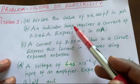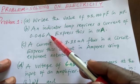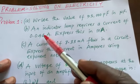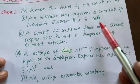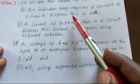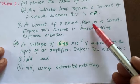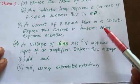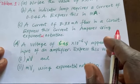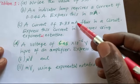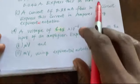Part B says an indicator lamp requires a current of 0.046 amperes — express this in milliampere. You are given current in amperes and asked to express it in milliampere, which is a smaller unit than the ampere. Part C says a current of 8.33 milliampere flows in a circuit — express this current in amperes using exponential notation. You are given milliampere and asked to change it to amperes expressed in exponential notation.